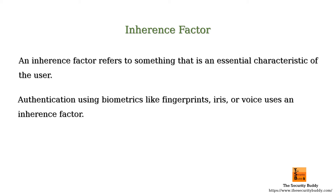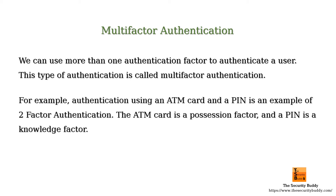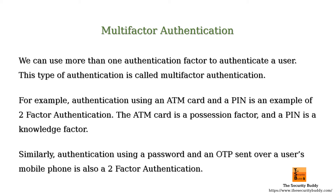We can use more than one authentication factor to authenticate a user. This type of authentication is called multi-factor authentication. For example, authentication using an ATM card and a PIN is an example of two-factor authentication — the ATM card is a possession factor and the PIN is a knowledge factor. Similarly, authentication using a password and an OTP sent over a user's mobile phone is also two-factor authentication, as an OTP sent over the mobile phone is considered a possession factor.